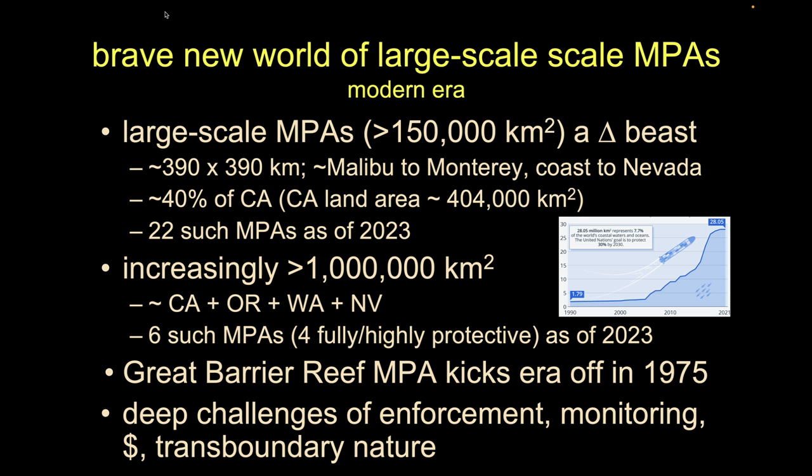When I say 150,000 square kilometers, that's like going from Malibu to Monterey and then from the coast to Nevada. That's about 40 percent of the terrestrial area of California. These are very large parts of the ocean.